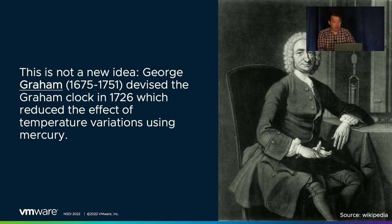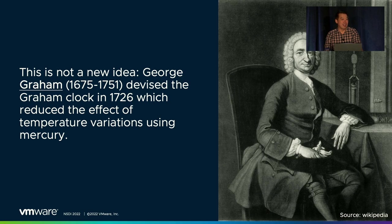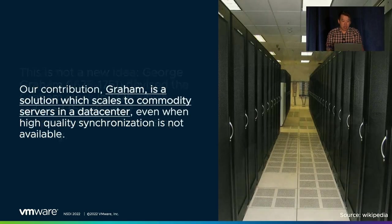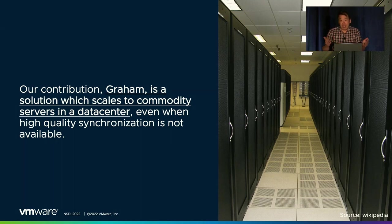This isn't a new idea at all. In fact, our system is named after George Graham, a clockmaker who built clocks to correct for temperature variations all the way back in 1726. In this picture, you can see him sitting in front of his clock, which uses a vial of mercury to compensate for the effects of metal expanding and shrinking as the temperature changes. Our solution, Graham, takes this idea and scales it to commodity servers, which haven't actually been designed for these corrections — and even when we don't have a precise external clock to verify the time in the first place.